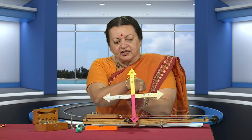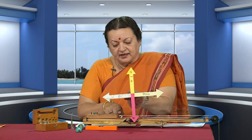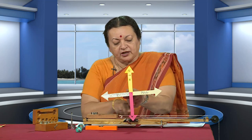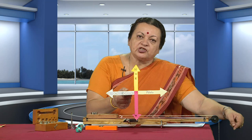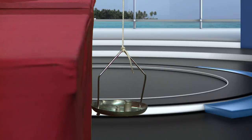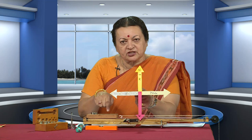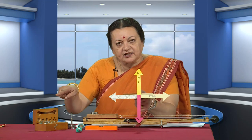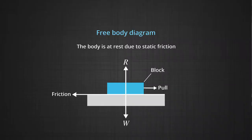The inextensible thread pulls the block in the direction of the pan. How much pull it exerts depends on the weight of the pan and whatever weights are placed inside it. Opposing this pull, until the block starts to move, is the force of friction acting in the opposite direction. If the block is not moving, all the forces on it are balanced — these are concurrent forces acting simultaneously, but the block remains stationary.